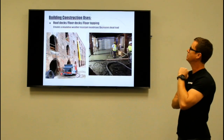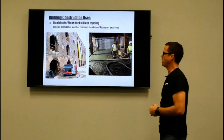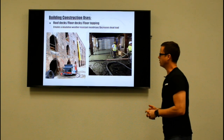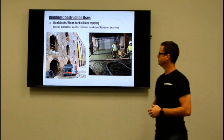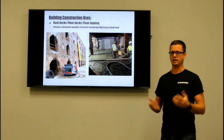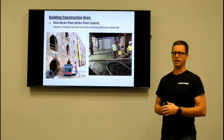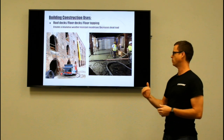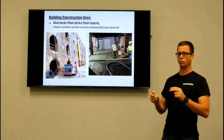Taking a look at a couple of the more popular building construction uses — roof decks, floor decks, and floor toppings. Cellular concrete creates an insulative weather-resistant membrane on a roof and decreases dead loads. These two photos show a project where we were on site with a contractor doing about 4,000 yards of lightweight fill on an old building being rehabbed. They needed to get the floor leveled out while keeping the dead load reduced, and after that they top-coated everything with about an inch and a half of normal lightweight concrete.